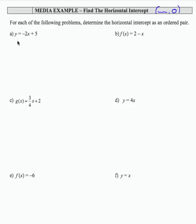What that means for us then with these equations is that we're going to replace the output with 0. So 0 equals negative 2x plus 5 in this first problem.